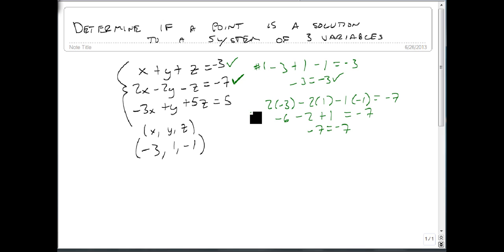This was number 1, number 2. Now for number 3, minus 3 times minus 3 plus 1 plus 5 times minus 1. Does that equal 5? Well, minus 3 times minus 3 is 9. Plus the 1 doesn't change. 5 times minus 1 is minus 5. This gives 10 minus 5, which sure enough, 5 equals 5. So it works for our third equation.